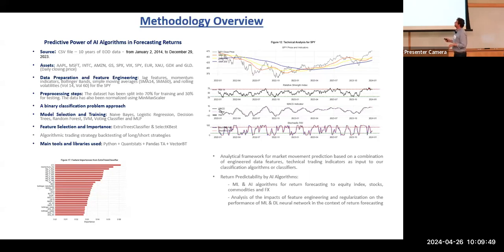We also added to the features lag features, momentum indicators, Bollinger bands, simple moving averages, and rolling volatilities to bolster our modeling predictive capabilities. We then move to the preprocessing steps, which is critical. We split the dataset into 70% training data set and 30% test set.